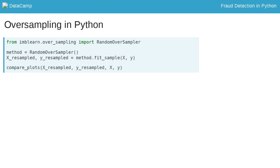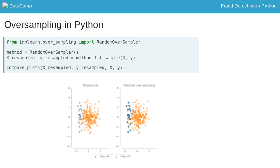I plot the datasets here side by side, such that you can see the effect of my resampling method. The darker blue color of the data points reflects that there are more identical data points now.